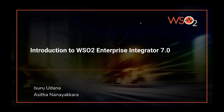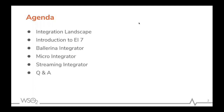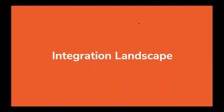Hi everyone, welcome to the Introduction to WSO2 Enterprise Integrator 7 webinar. I'm Isuru Dana, an architect at WSO2 Integration team. With me I have Asitha Nanayakkara, who is a technical lead at WSO2 Integration team. Today's agenda: first we'll briefly touch on the integration landscape, then give an introduction to EI7, discussing the three main integrators — the Ballerina Integrator, Micro Integrator, and Streaming Integrator — and finally we'll have a Q&A session.